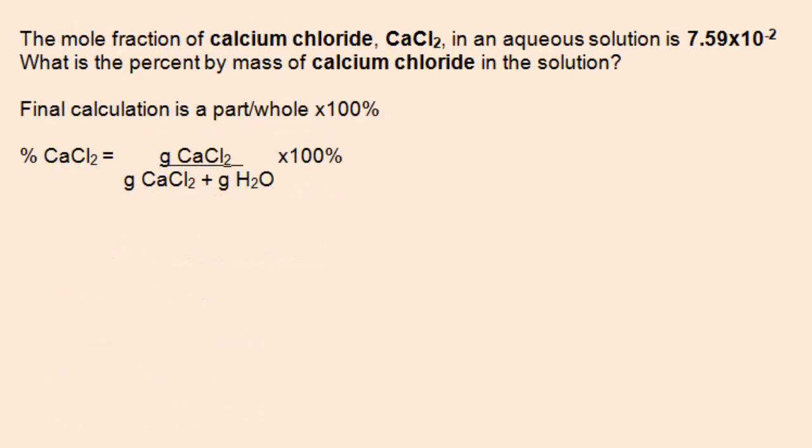In this problem, we're going to use the mole fraction to determine the percent by mass of a component in a solution. The final calculation is going to be a part over a whole times 100%. In this case, the part is how much calcium chloride is in the total solution, which includes calcium chloride and water.